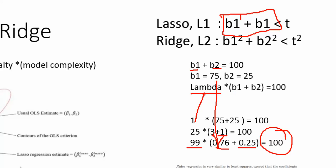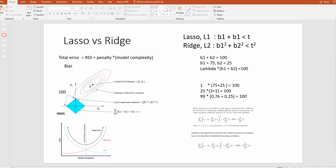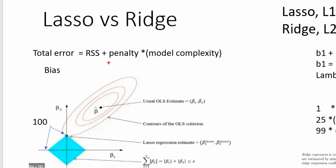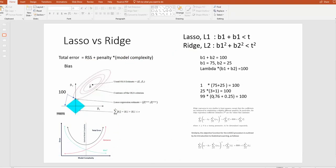When the lambda value is 0, this whole penalty term goes away and we just have RSS — which is ordinary least squares or plain linear regression. But as we start increasing the penalty, to compensate and minimize the whole cost function, these weights start to go down.